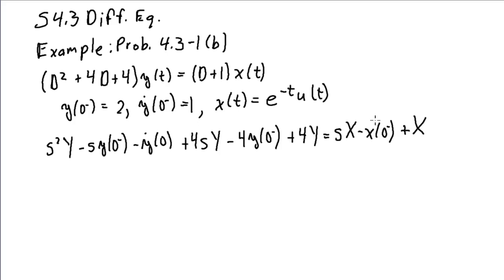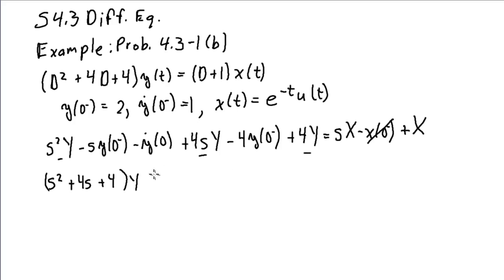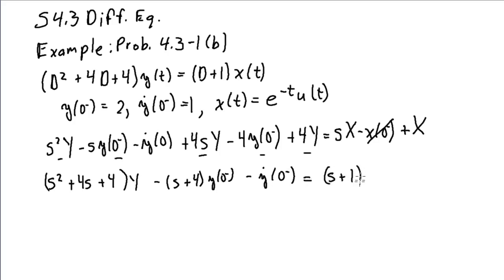Since x(0⁻) = 0 for a causal input, we can drop that term. Collecting terms involving Y gives (s² + 4s + 4)Y, accounting for the s², 4s, and 4y terms. The remaining term involves y'(0⁻). On the right-hand side we have (s + 1)X.